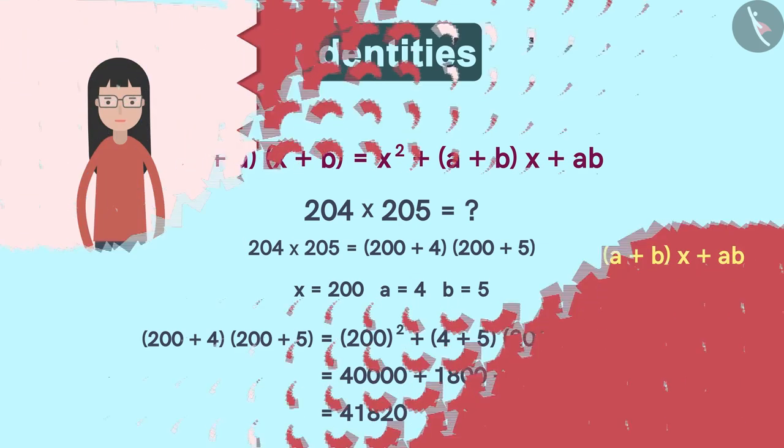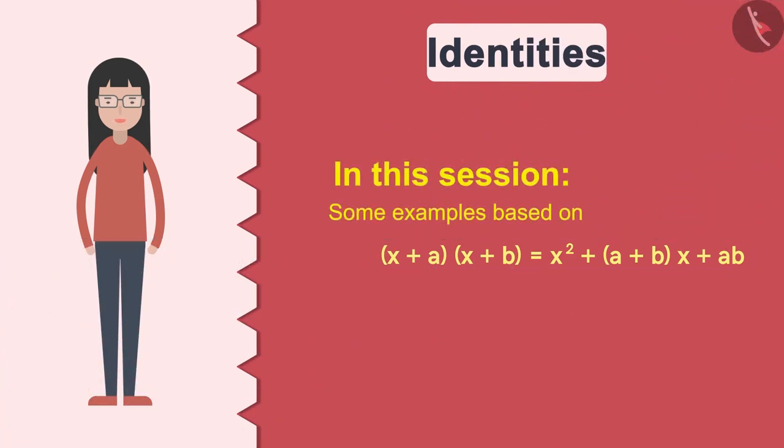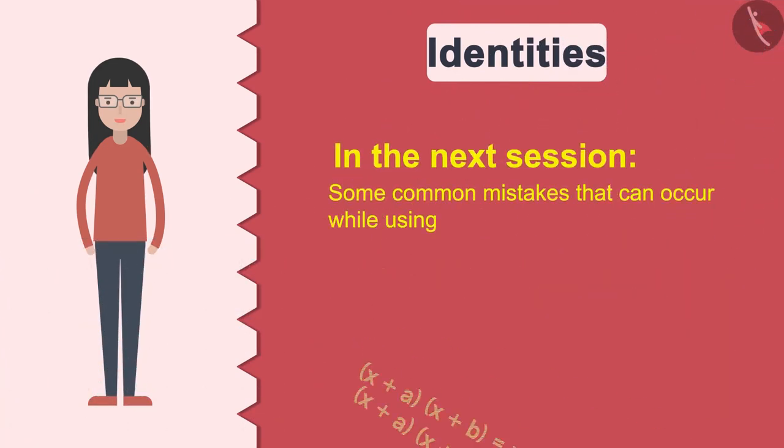In this session we have seen some examples based on this identity. In the next session we will see some common mistakes that can occur while using this identity.